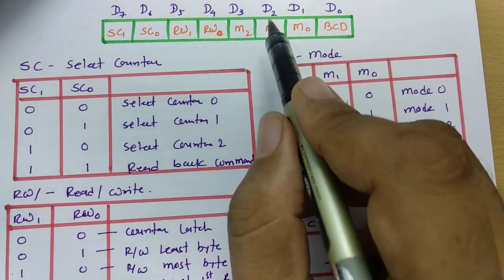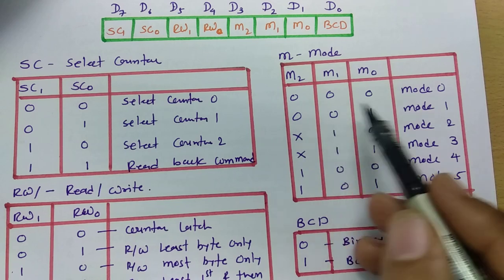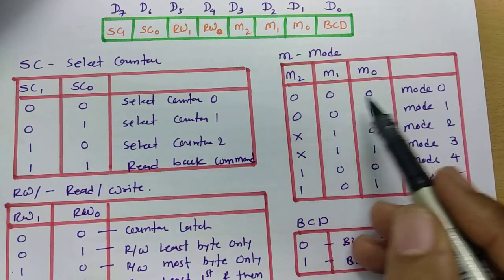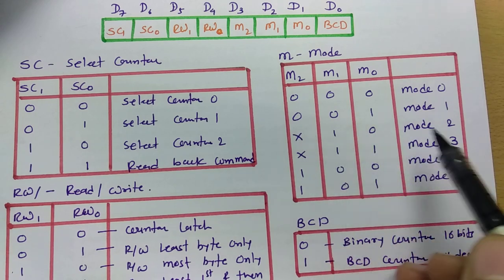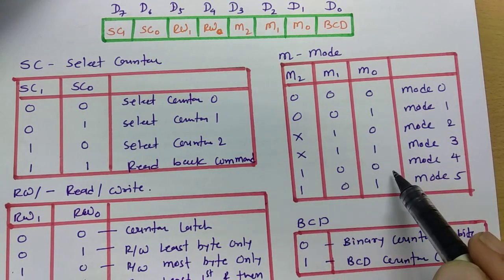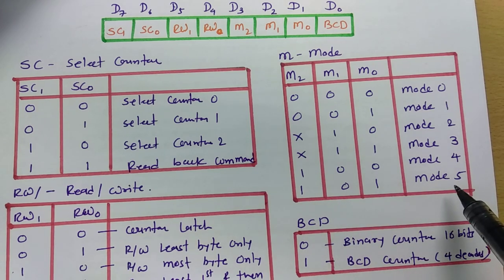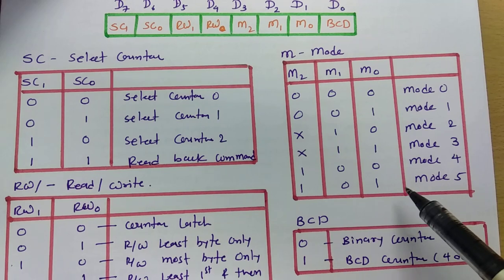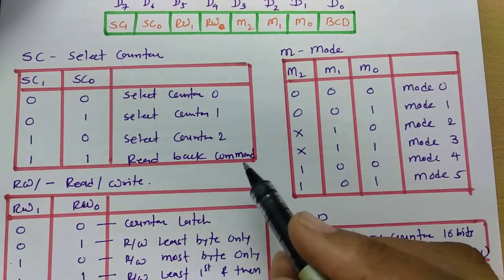Bits M0, M1, and M2 select the mode of operation: 000 is Mode 0, 001 is Mode 1, don't-care 10 is Mode 2, don't-care 11 is Mode 3, 100 is Mode 4, and 101 is Mode 5. This gives 6 different modes for 8254.